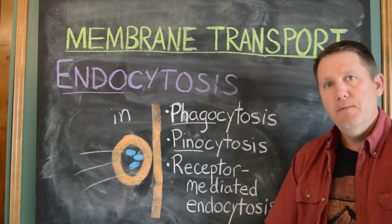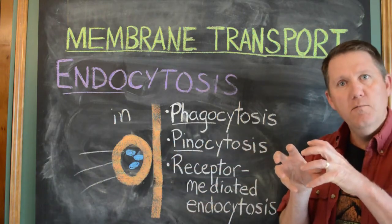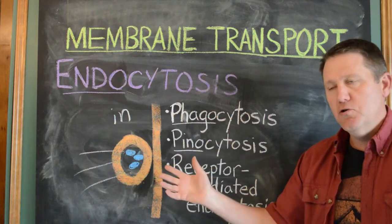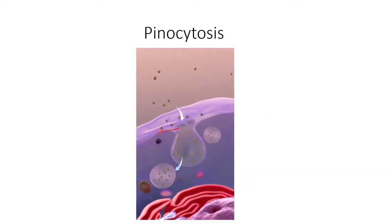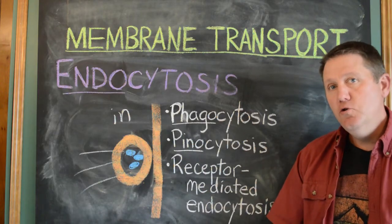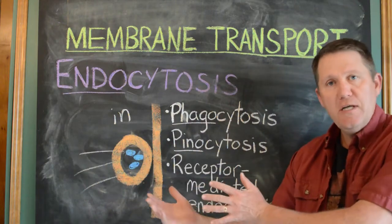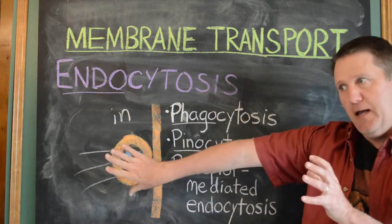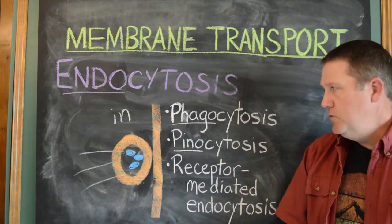Next is pinocytosis. 'Pino' means to drink, so this is cellular drinking, and it looks just like the process illustrated earlier. A pit forms but is not very specific — whatever fluid and solutes are outside the cell just get slurped right in. The membrane divots in more and more until it forms a vesicle that pinches off, bringing in whatever happens to be right outside the cell membrane. All cells in the body can do pinocytosis — for example, in the capillaries to transport fluids from the bloodstream, or in the liver to bring in materials.